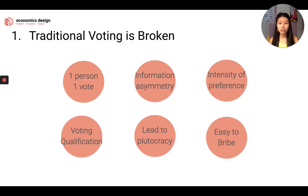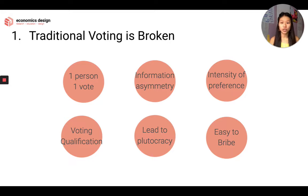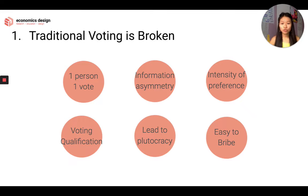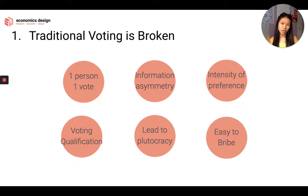You also have voting qualification, which is similar to voting information asymmetry. It can also lead to plutocracy because it's easier to bribe. A person that's very wealthy can just bribe someone off-chain or in a traditional way. Or another way is you lobby Congress or whatever, and you alter the vote. Traditional voting has problems — it could work in some situations but not in others.